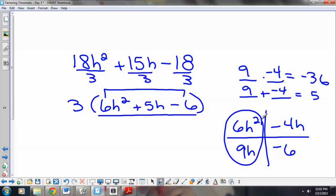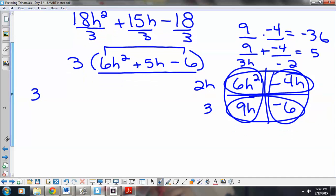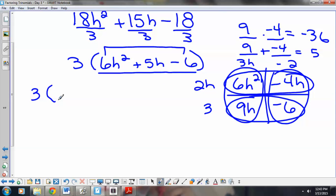So, we have here 3h. Here, our greatest common factor is negative 2. Here, our greatest common factor would be 2h. And, in this row, it would be 3. So, when I write my factor formula, I am going to write down the 3. That was my greatest common factor at the get-go. So, I have factors of 3h minus 2 and 2h plus 3. Again, we don't need to solve because this is not an equation.